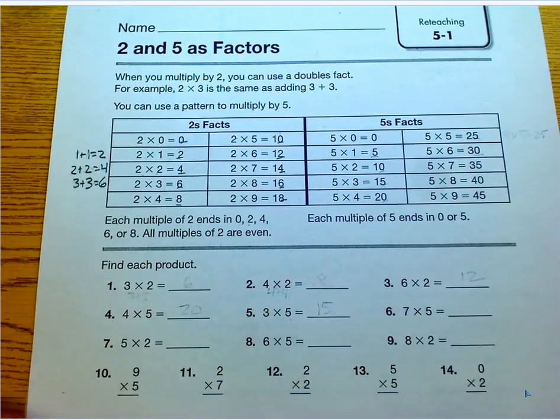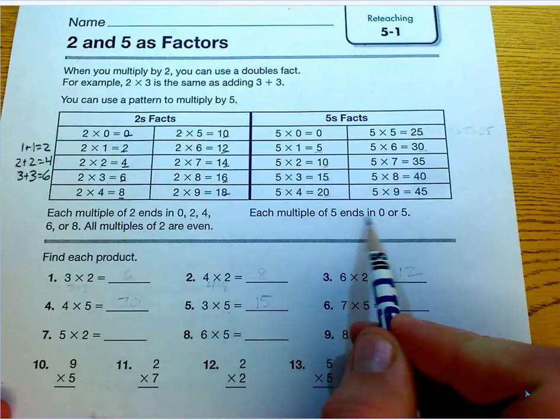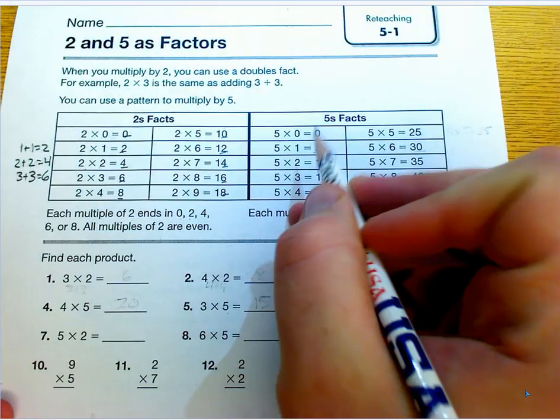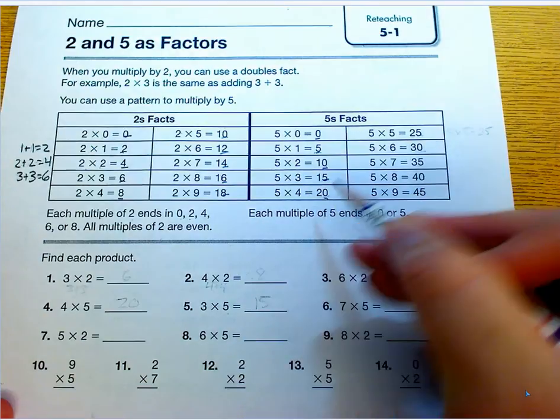Now fives, they have a little bit different of a rule and they'll either end in a 0 or a 5, which is really nice and you can see that through here: 0, 5, 0, 5, 0, 5.